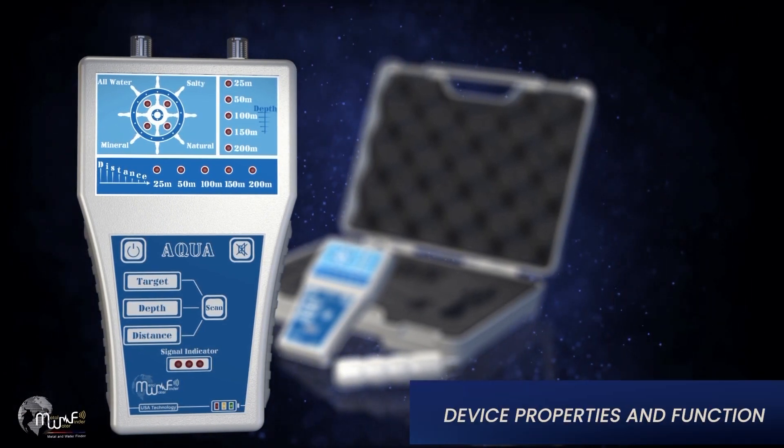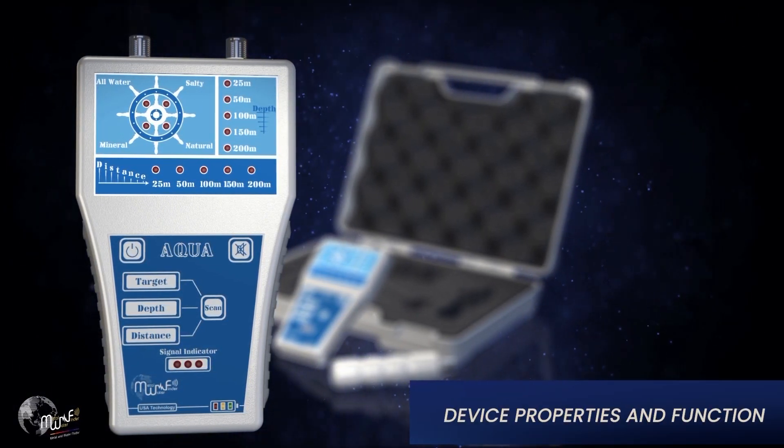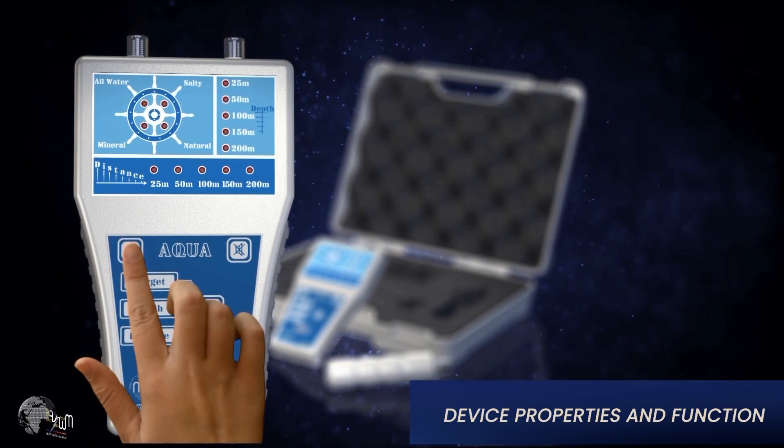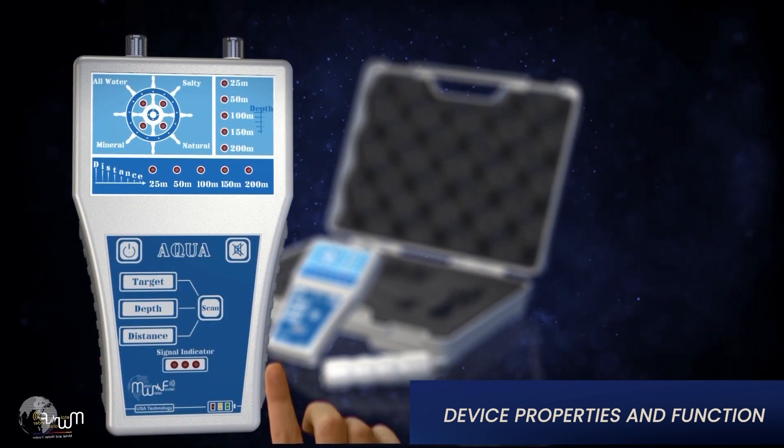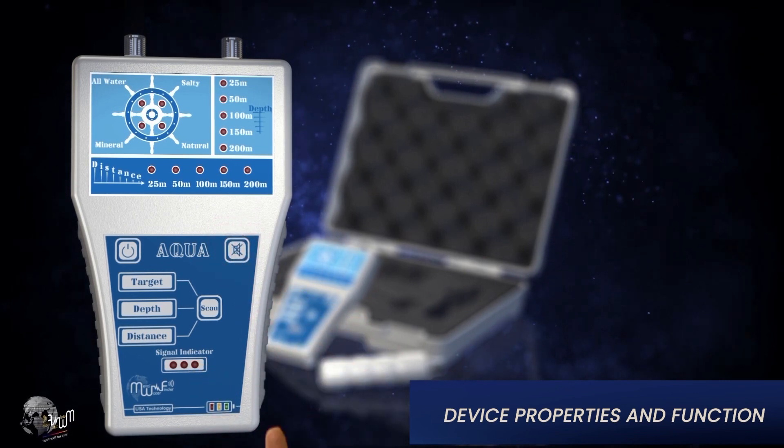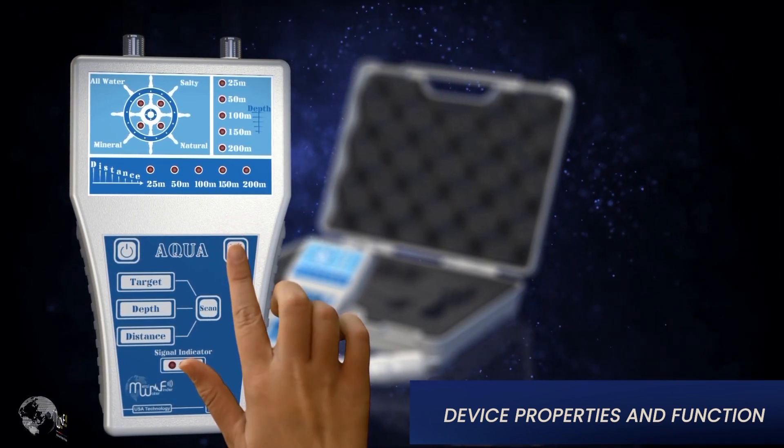Device properties and function. To turn the device on, press and hold the power key for three seconds. To control the volume levels using the volume key, press intermittently on the key to change the level.